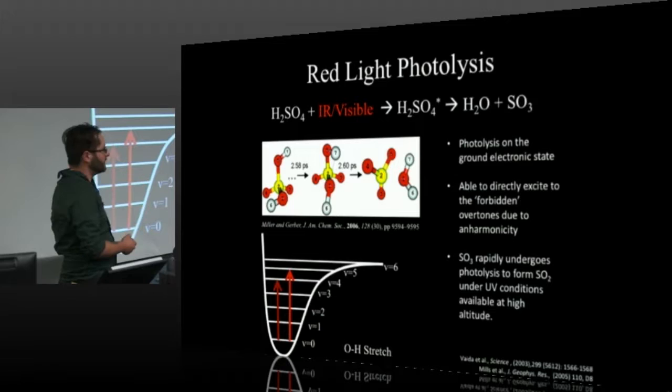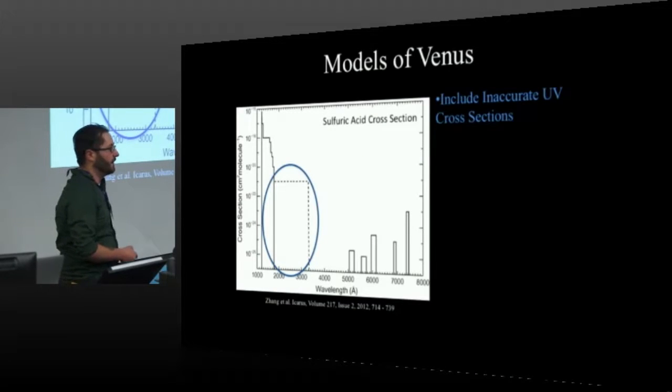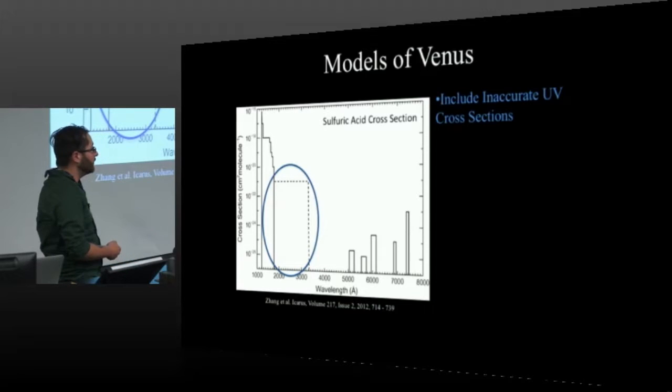However, this doesn't even begin to account for the amount of SO2 that's observed in Venus's atmosphere. And so the models do a couple of other things to then try and compensate and account for this that may or may not be physically accurate. One of which is they include an inaccurate UV cross-section. So they take the upper limits of measured cross-sections from about 200 to 320 nanometers and assume that all the light absorbed immediately leads to photolysis. Although a lot of work that's been done has shown that this cross-section actually is probably much smaller and is not actually leading to any sort of UV photolysis.